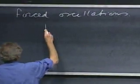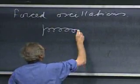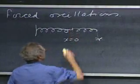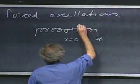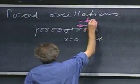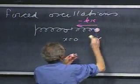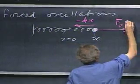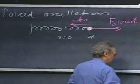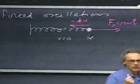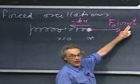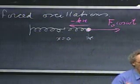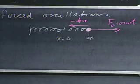I can take a spring system as we had before. This is x equals zero, this is x, and we have the spring force, minus kx. But now this object, which is mass m, I'm going to add a force to it — F zero, which is the amplitude of the force, times the cosine of omega t. So I'm going to force it in a sinusoidal fashion with a frequency that I choose. This frequency is not the frequency with which the system wants to oscillate. It is the one that I choose, and I can vary that. The question now is: what will the object do?